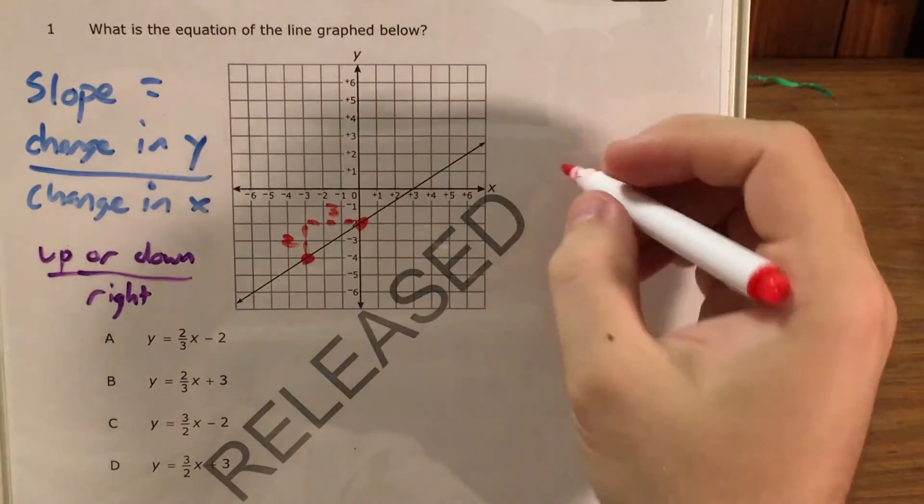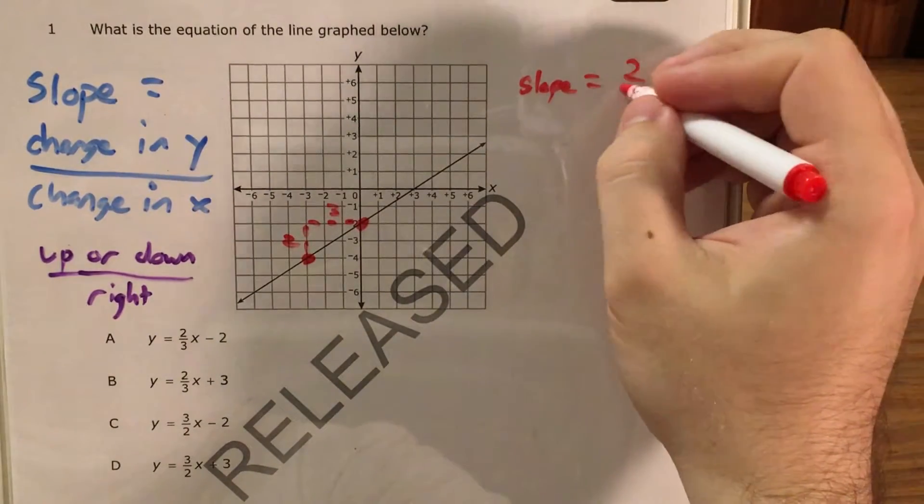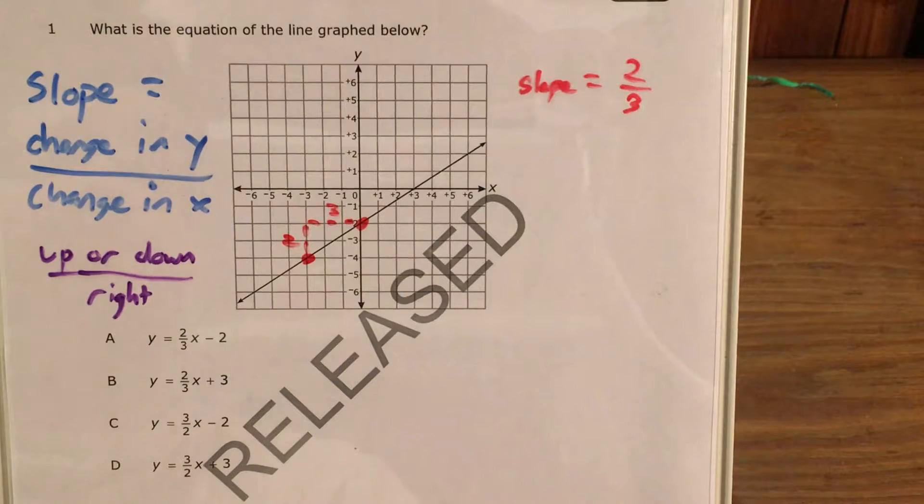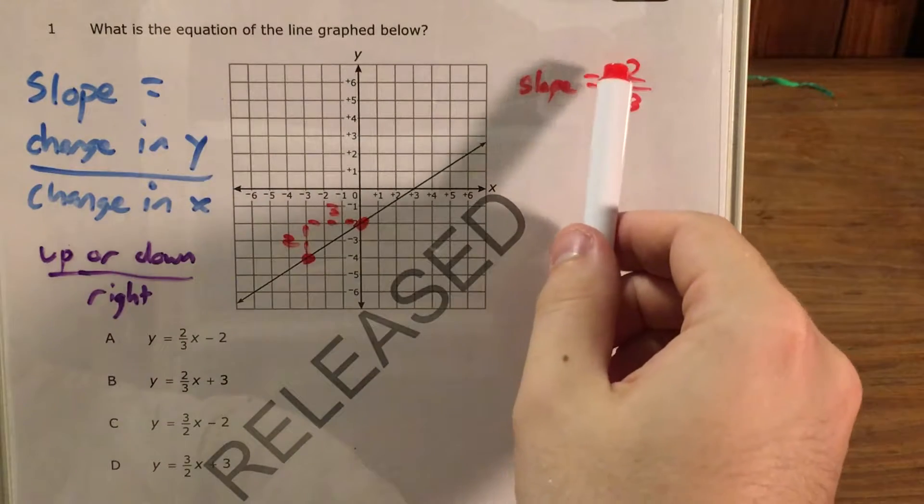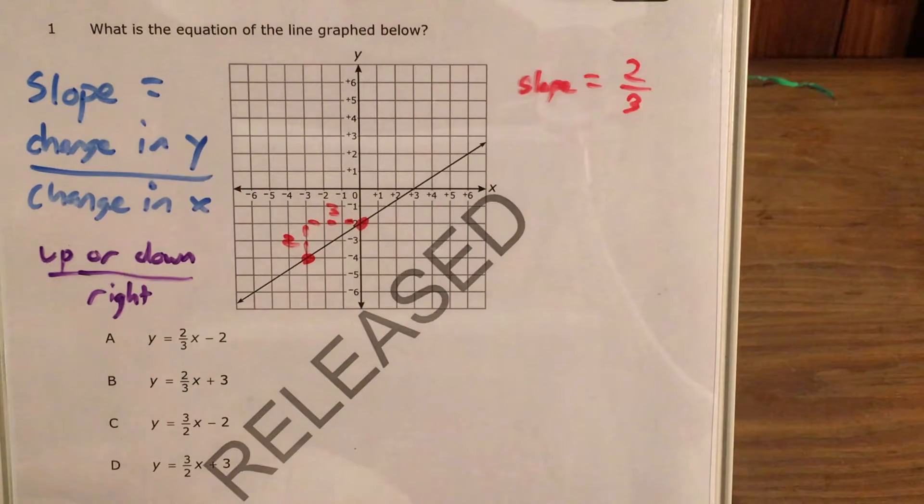So my slope I would write as two-thirds or two over three. This is a positive two which tells me I'm going up two as I go right three.